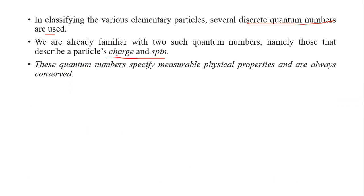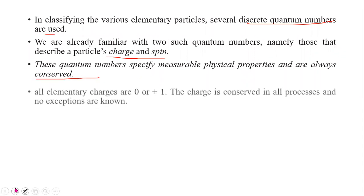These quantum numbers specify measurable physical properties and are always conserved. In the elementary particle reaction, total charge and total spin remains constant. That is the law of conservation of charge and the law of conservation of spin.